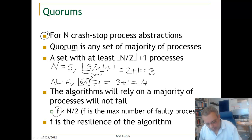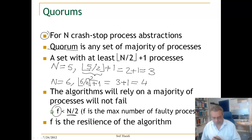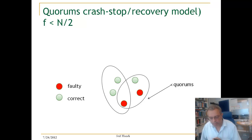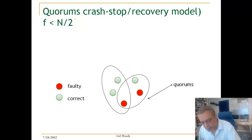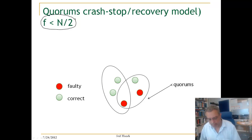We need the quorum such that F, the number of faulty processes, should be less than the majority of processes in the system. F is called the resilience of the algorithm. In the crash-stop model, we assume that F should be at most less than half of the number of processes in the system.